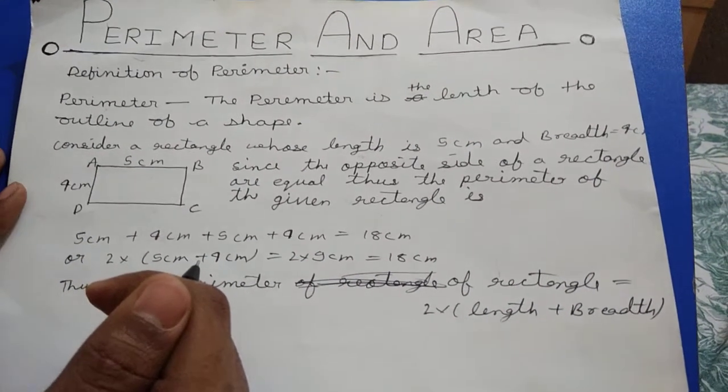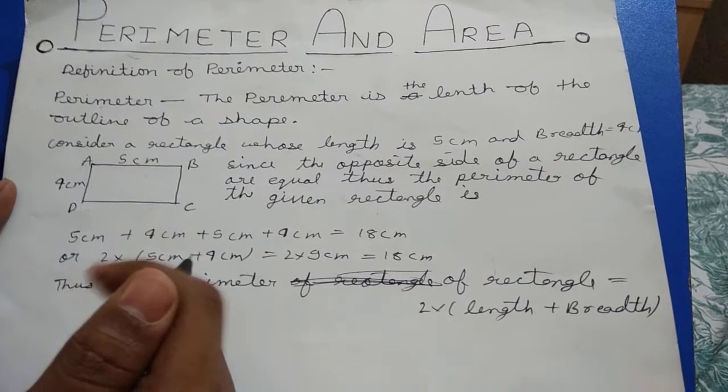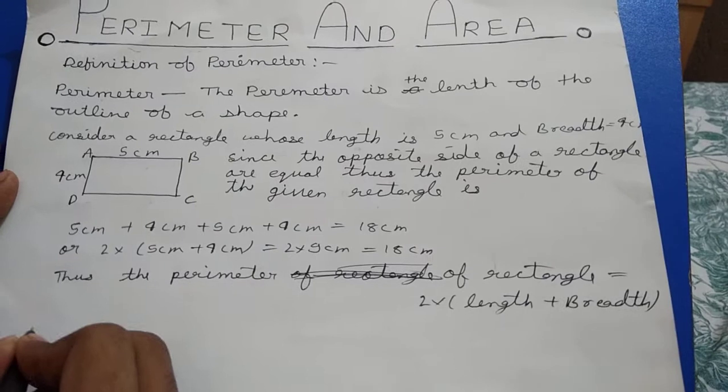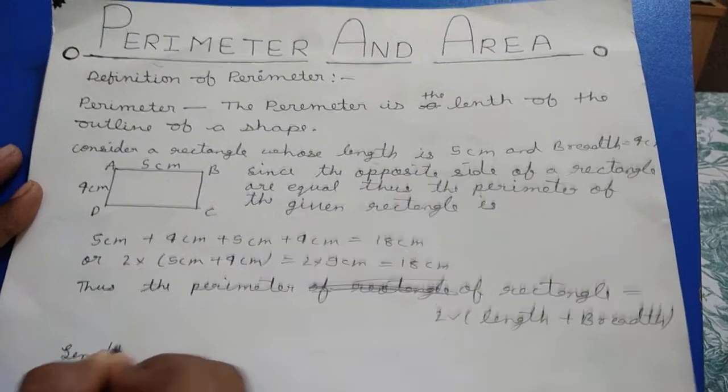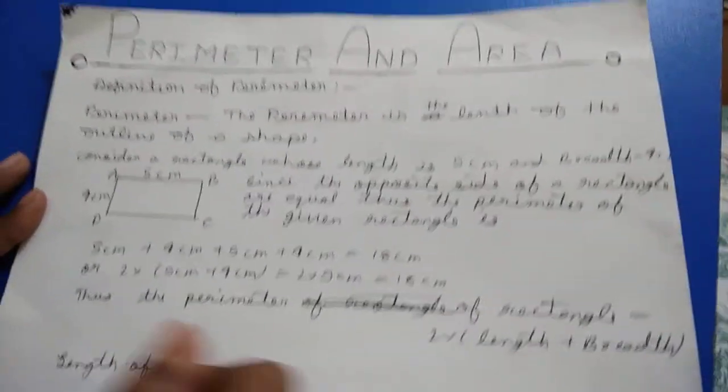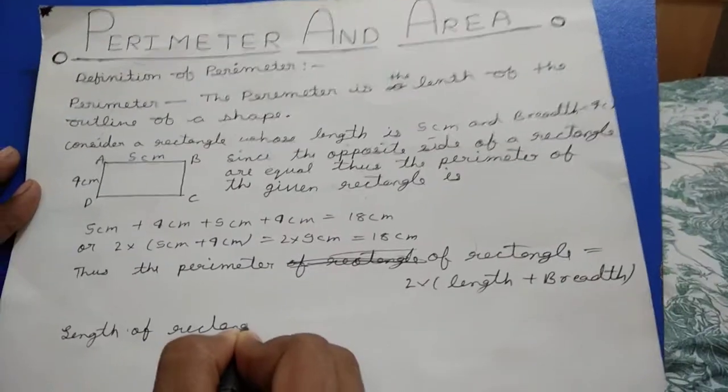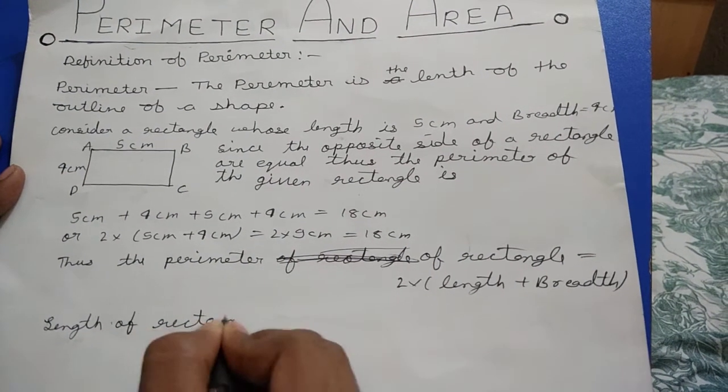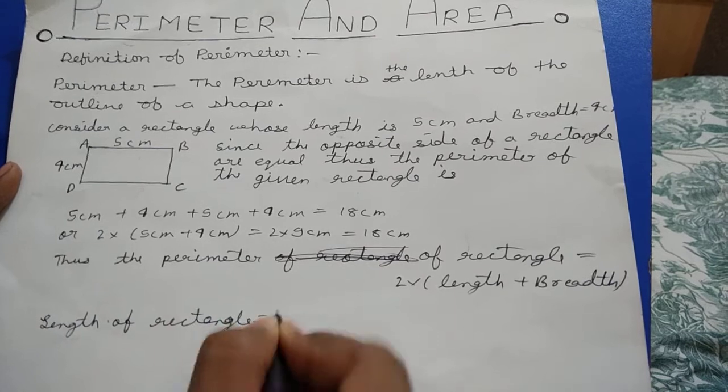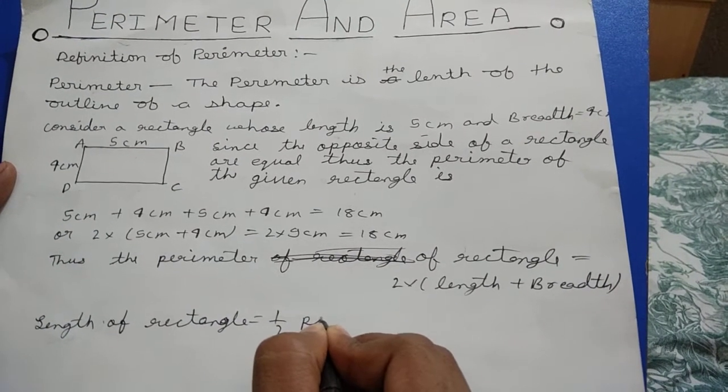We can also calculate the length and breadth of a rectangle using the perimeter formula as follows. Length of rectangle is equal to half of perimeter minus breadth.